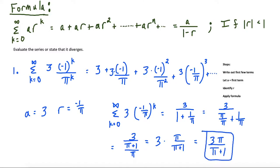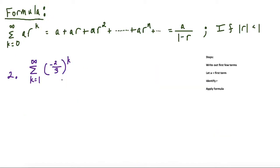That's our solution to the first question. For the second question, we're going to use the same steps. Notice this time we're starting at k equals one, not k equals zero — but as long as you follow these steps, you'll be okay evaluating a geometric series. We are allowed to use this formula because negative two thirds is a number where the absolute value of negative two thirds is two thirds, which is less than one.